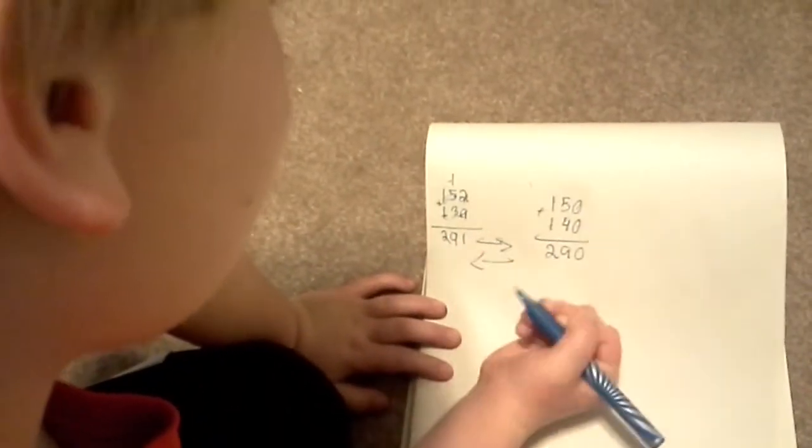And that is very close to 290, it's just one off. Okay, that is how you do ballpark estimate everyone. I'll see you on YouTube again, bye.